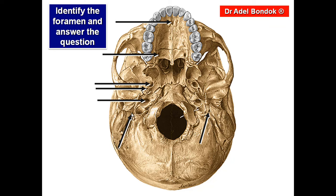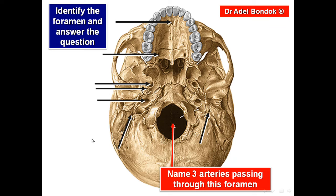The stylomastoid artery is a branch from the posterior auricular artery and supplies the facial nerve. Three arteries pass through foramen magnum: the two vertebral arteries entering the cranial cavity, the anterior spinal artery descending down, and the posterior spinal arteries.